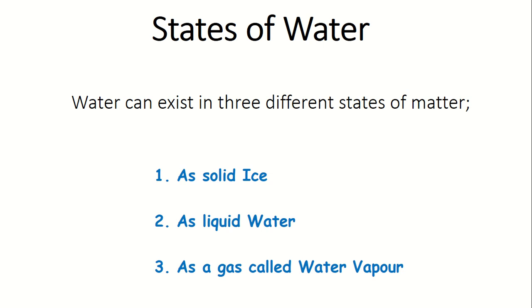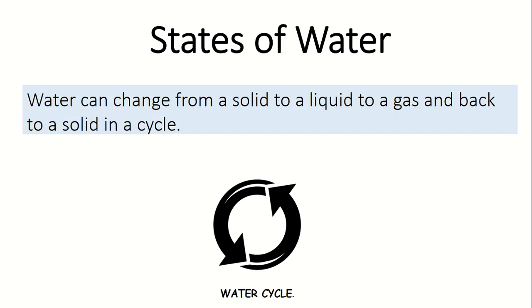And understanding that water can change states of matter is really important to understanding how life on our planet actually exists. And so when water changes from a solid to a liquid and back to a solid or back to a liquid, we call that the water cycle. So the water cycle is essentially water changing into different states, and we're going to go into more detail with that as we progress with this lesson.